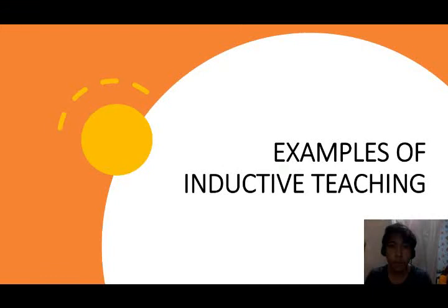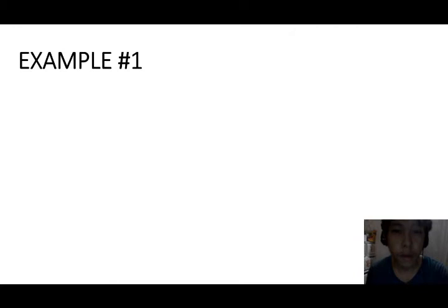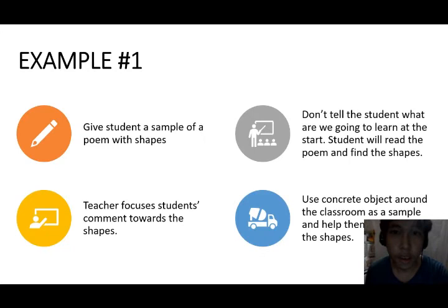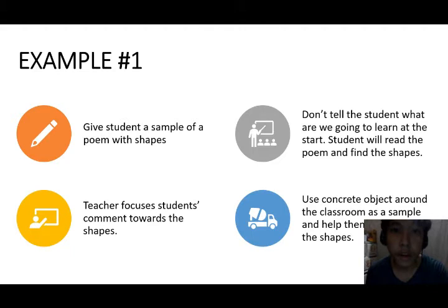Here are some examples of inductive teaching. Example number 1 is about shapes. First, give the student a sample of poems with shapes, but don't tell them what they are going to learn at the start. Students will read the poem and find the shapes. The teacher will then focus the students' comments toward the shapes, and finally use concrete objects around the classroom to help them recognize the shapes.